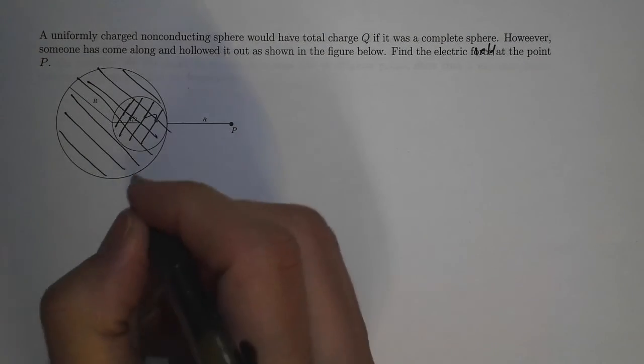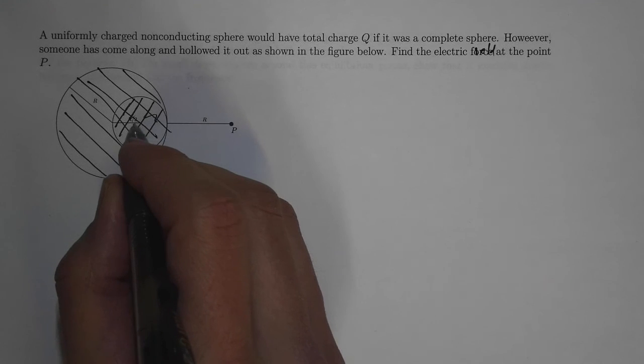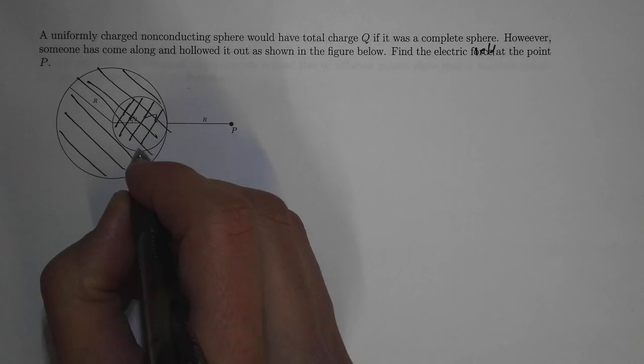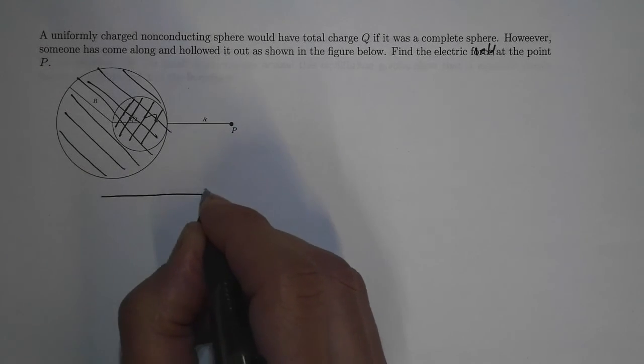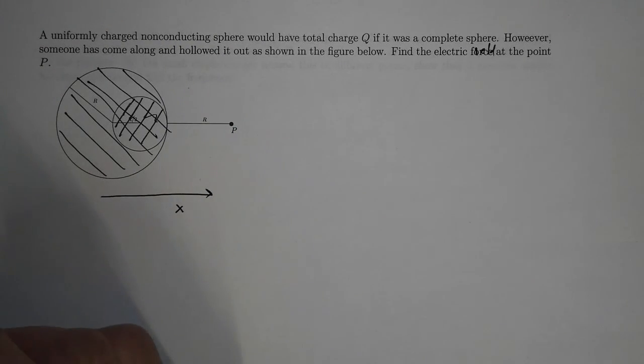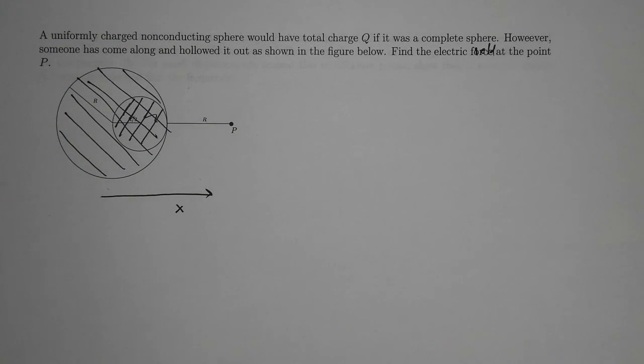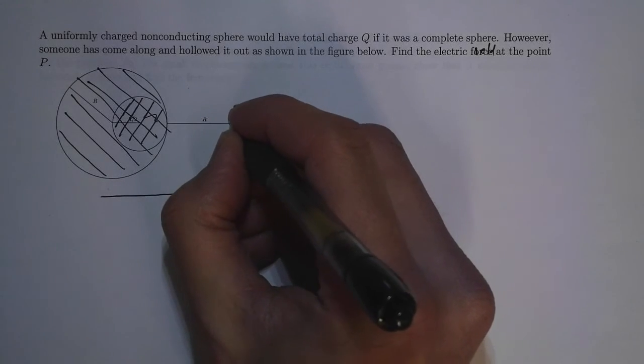Let's look at this very carefully. I have hollowed out a sphere of radius r over 2 inside this sphere along some axis. Let me call this axis the x-axis. This entire sphere would have had charge Q if it was a full sphere. This is a very good problem in Gauss's law because you can reconstruct it as two Gauss's law problems.